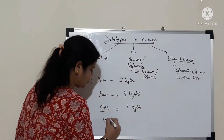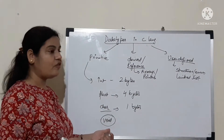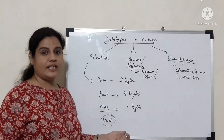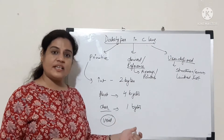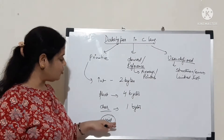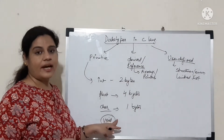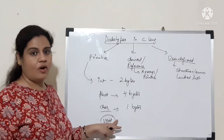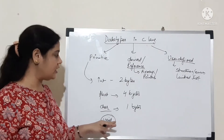One more data type is void. Void is a data type which means nothing — it is basically used as a return type of any function.